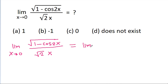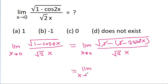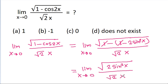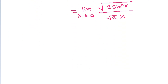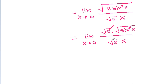It will be equal to limit x tends to 0 of square root of (1 − cos 2x) divided by root 2 x. Applying the identity, 1 − cos 2x becomes 2sin²x, and simplifying, root 2 will get cancelled.